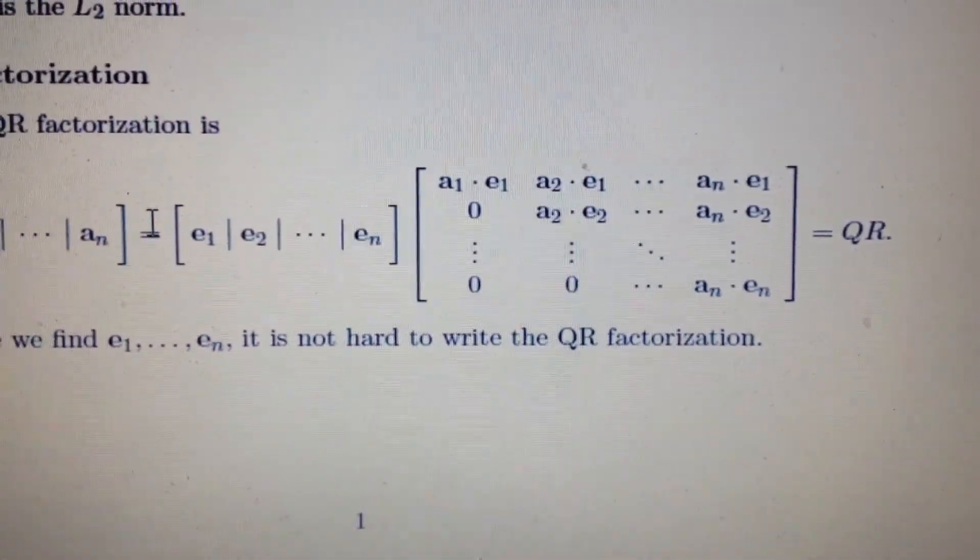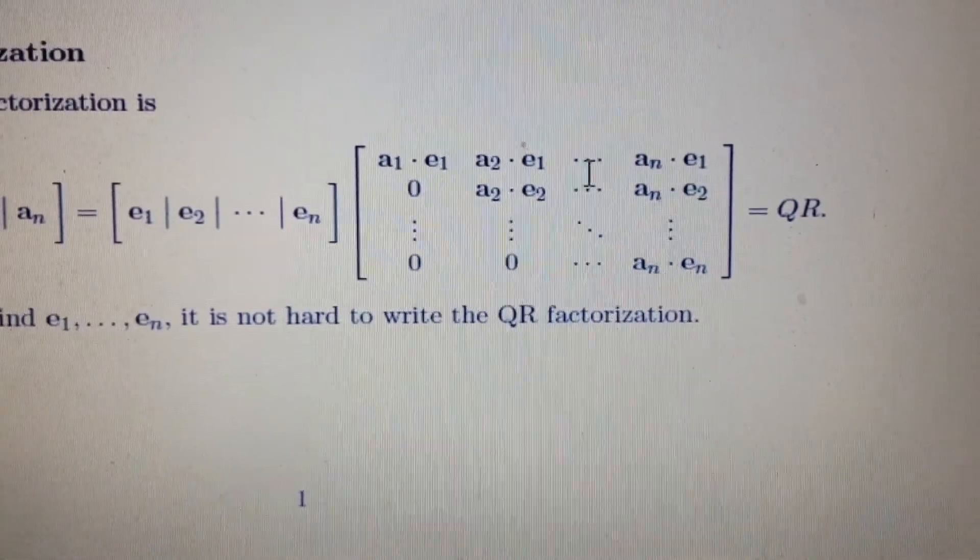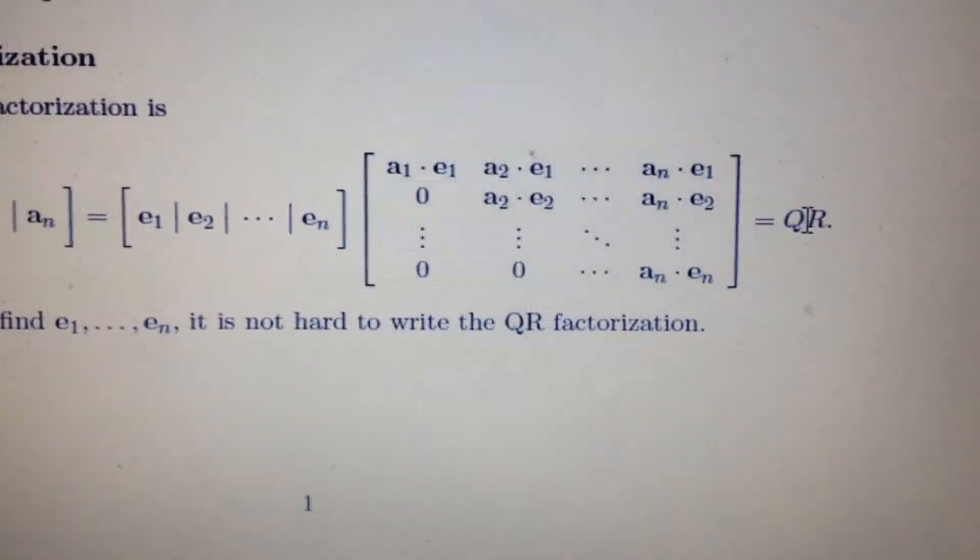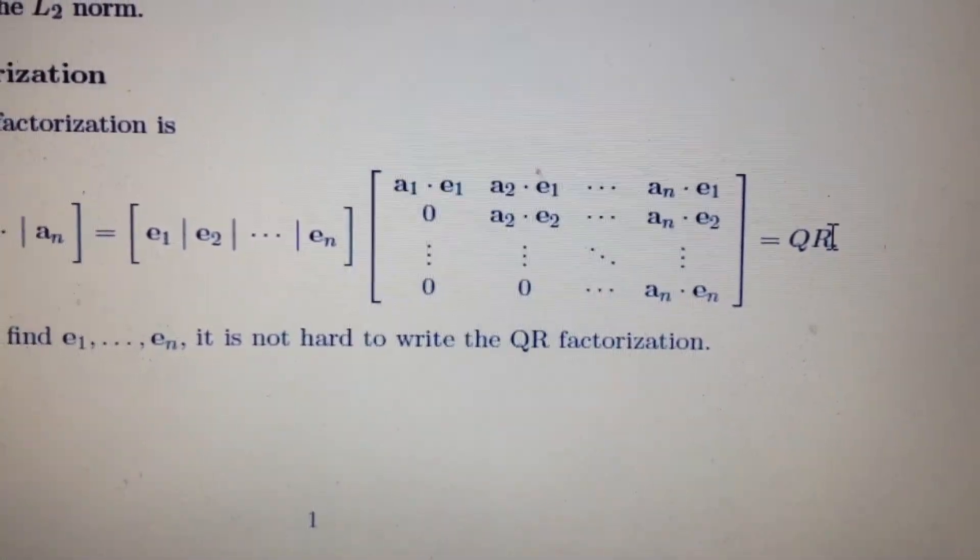This here gives you the directions, and this matrix here is upper triangular, and these directions are orthogonal, so you have an orthogonal times an upper triangular matrix, QR factorization.